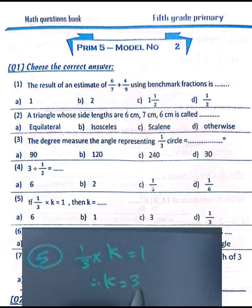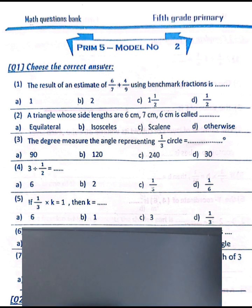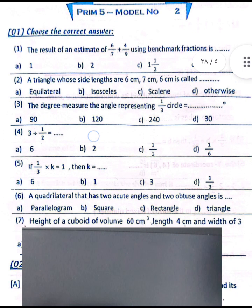Question number five: if one third multiplied by k equals one, then the value of k equals three, because three times one third equals one.